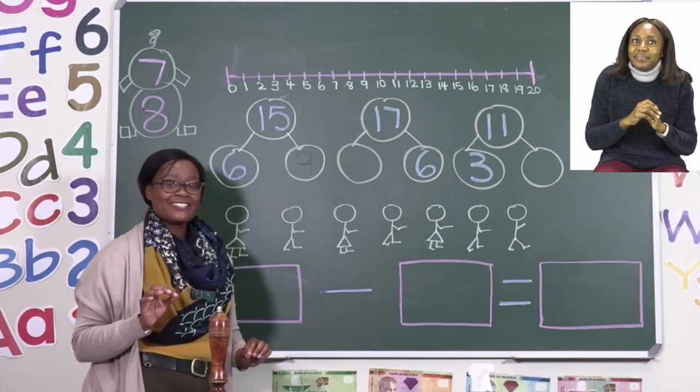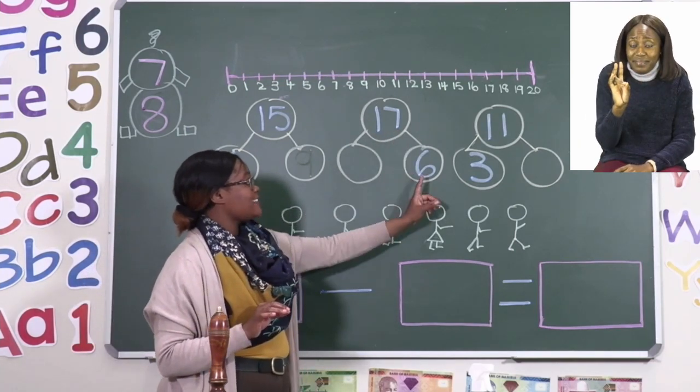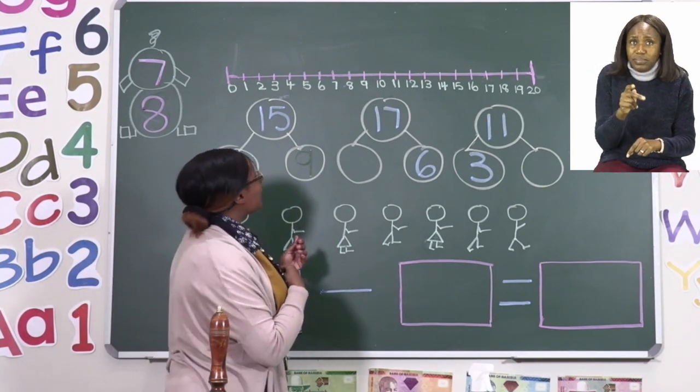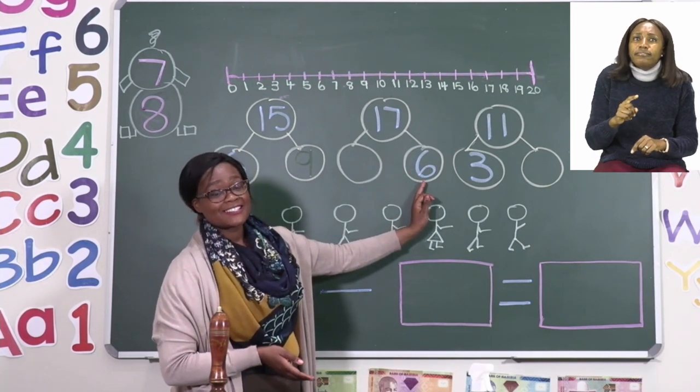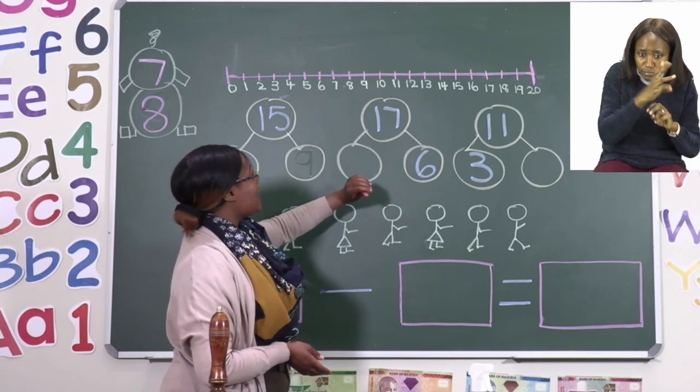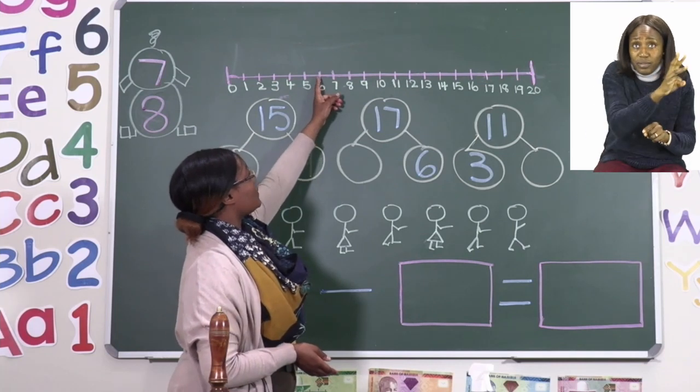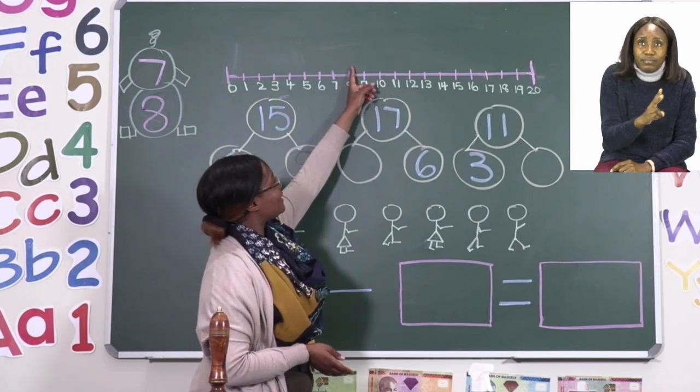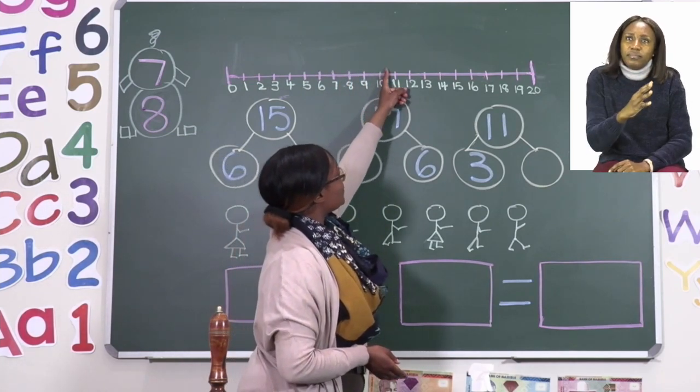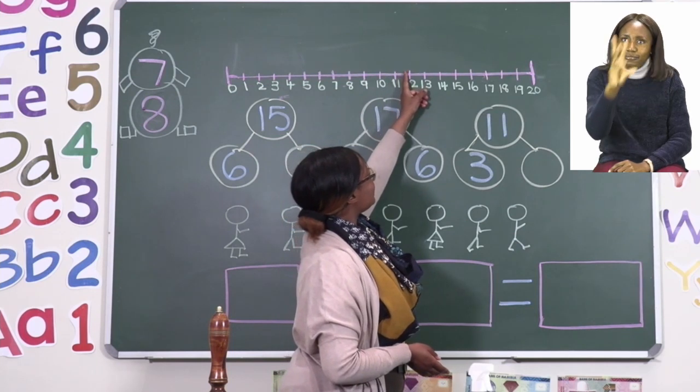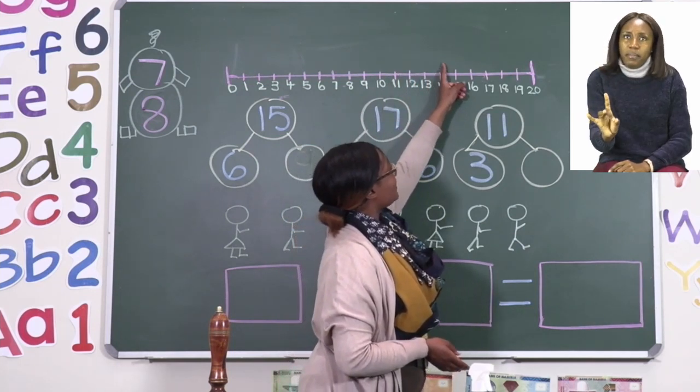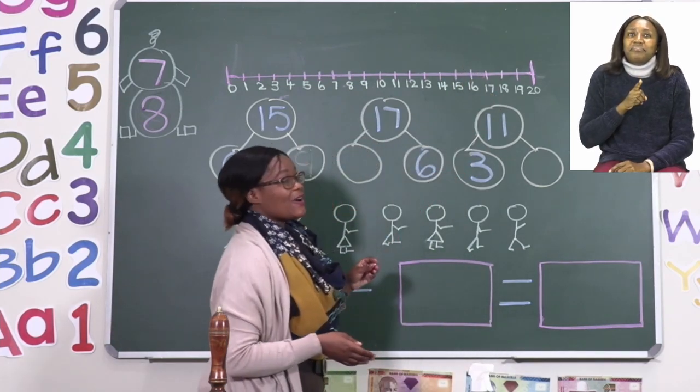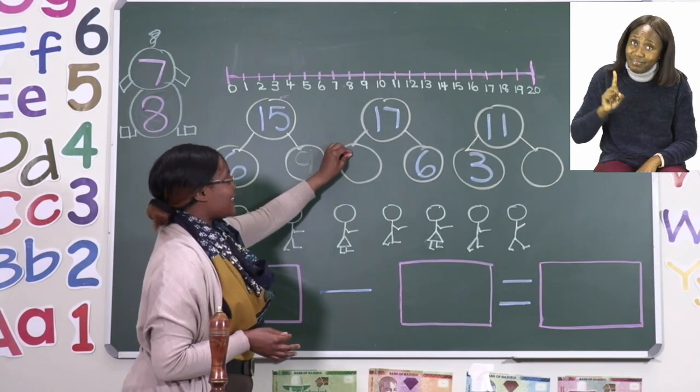Now for the next one we have 17 and 6 again. So this time what we need to do is make sure we get from 6 to 17. We are at 6 again and we are going to hop. Are we ready? Let's go. 1, 2, 3, 4, 5, 6, 7, 8, 9, 10, 11. So our answer boys and girls is 11.